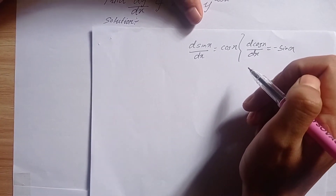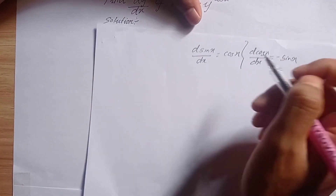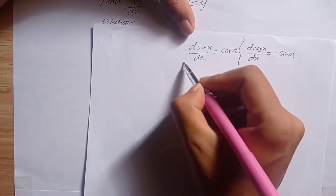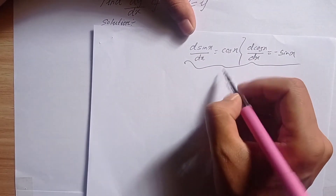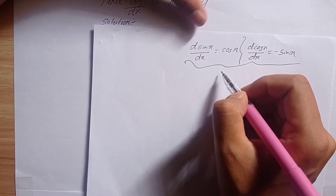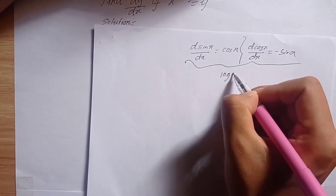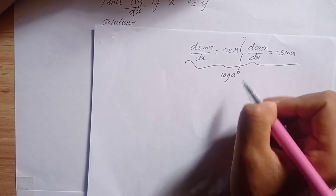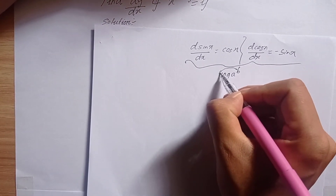And the derivative of cos x with respect to x is minus sin x.